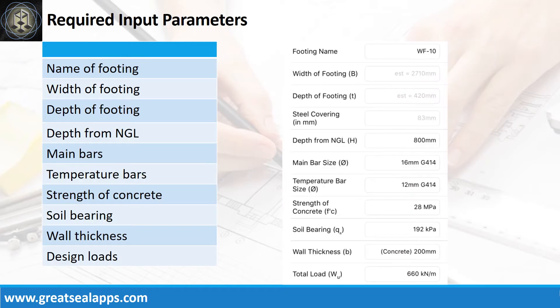Enumerating the input parameters required: name of footing WF10; depth from natural grade line 800 mm; main bars 16 mm bar at grade 414; temperature bars 12 mm bar at grade 414; strength of concrete 28 MPa; soil bearing capacity 192 kPa; wall thickness 200 mm concrete wall; and factored uniform load 660 kN per meter.